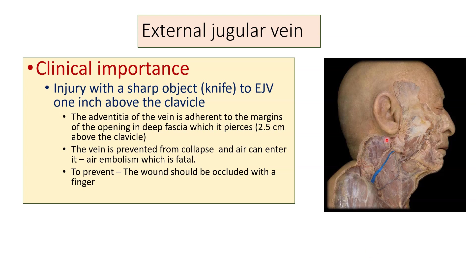In this picture, we can see the external jugular vein starting from the lower angle of the parotid gland, passing over the sternomastoid and over the posterior triangle.